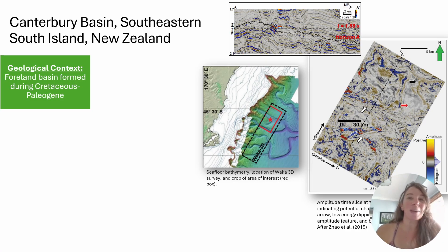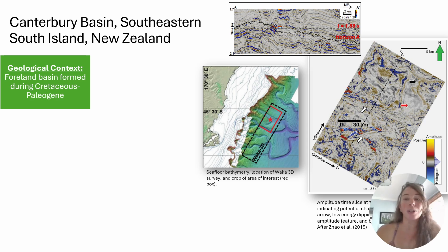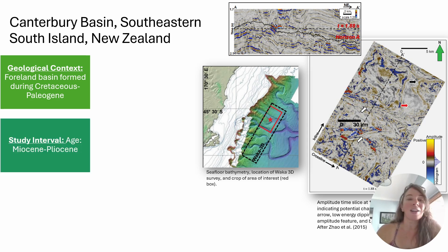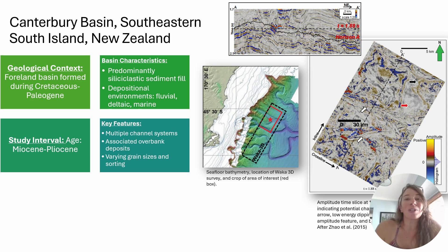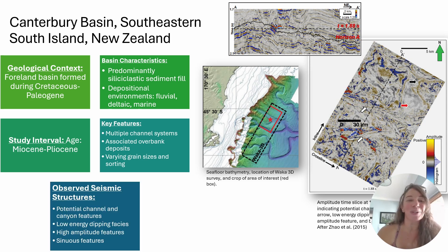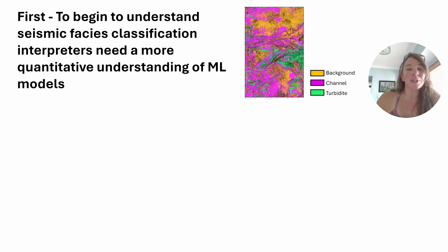I'm going to show this through a quick demo with the Canterbury Basin dataset. On the right-hand side, you can see a time slice through the amplitude data. There are some interesting features you can start to see, and you can look at the vertical section on the top of the screen in the amplitude data. This is a fore-land basin that was formed during the Cretaceous-Paleogene, and we're going to be looking at the Miocene-Pliocene interval, where there's all sorts of sedimentary siliciclastic fill — fluvial environments, deltaic, marine environments. There are these overlapping channel systems, overbank deposits, all that really fun stuff that complicates the seismic but is fun to explore.